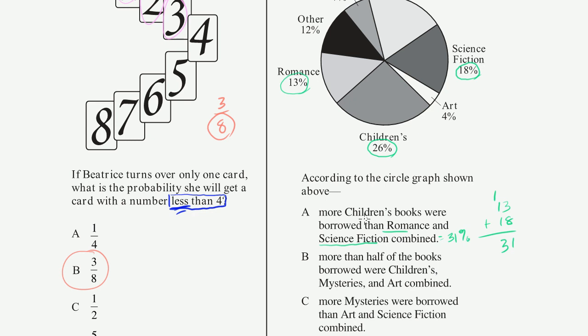So if you take romance and science fiction combined, that's 31%. That's 31% of the books. Well, the children's books were only 26%. So that is definitely not correct.